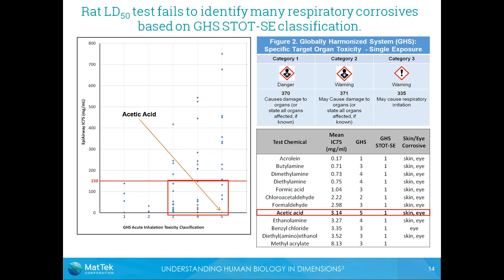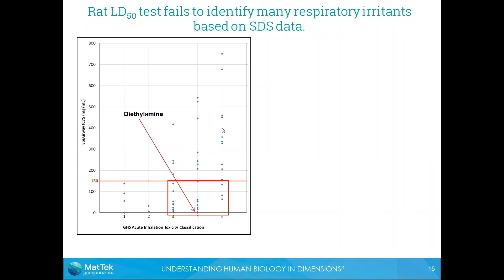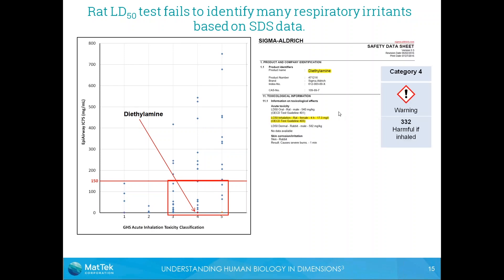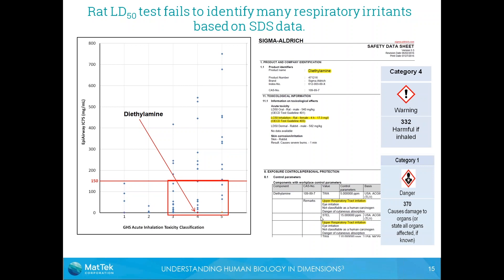The second example is diethylamine, which again has a very low IC75 value but only a GHS category 4 classification based on rat LC50 data. On the safety data sheet it's listed as category 4, but further down it notes that this chemical causes significant upper respiratory tract irritation. It is actually classified as STOT category 1. So it appears that the rat LC50 test is missing not only respiratory corrosives but also respiratory irritants.